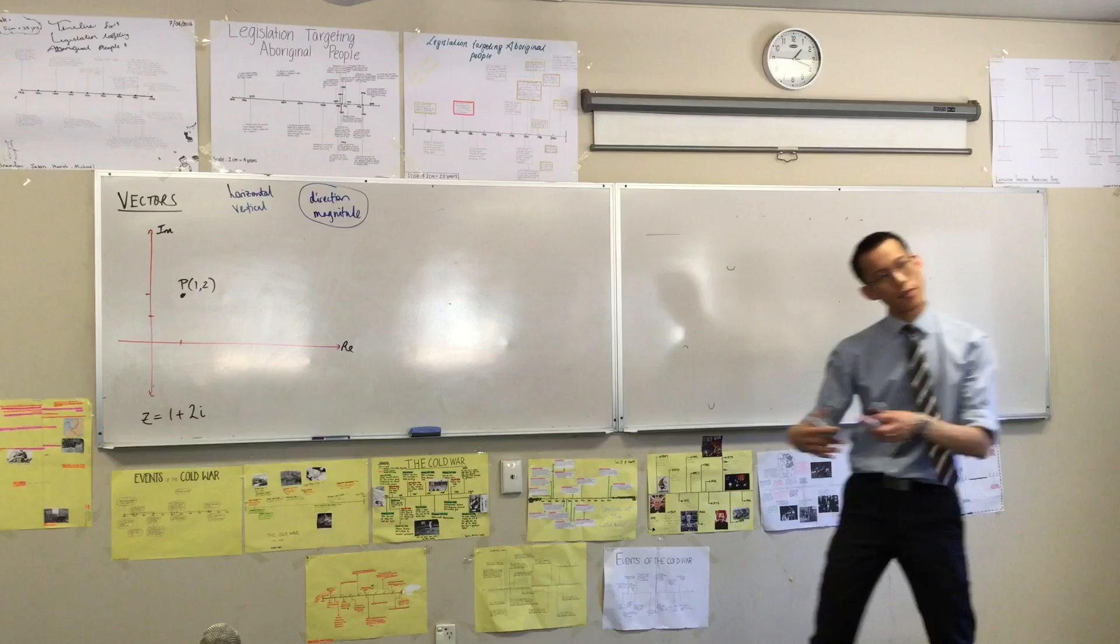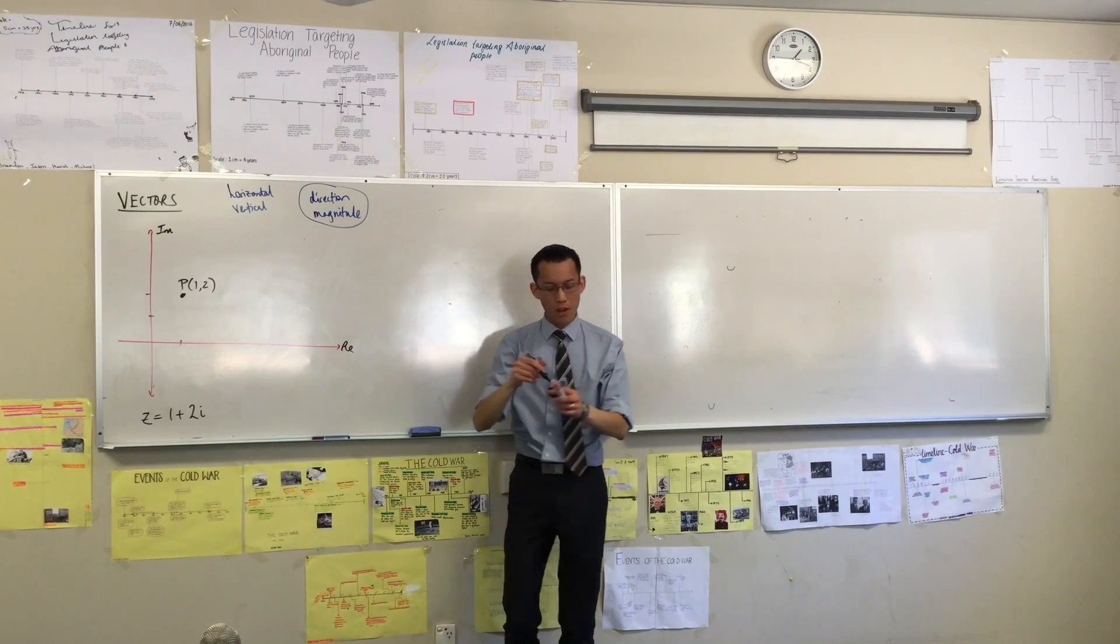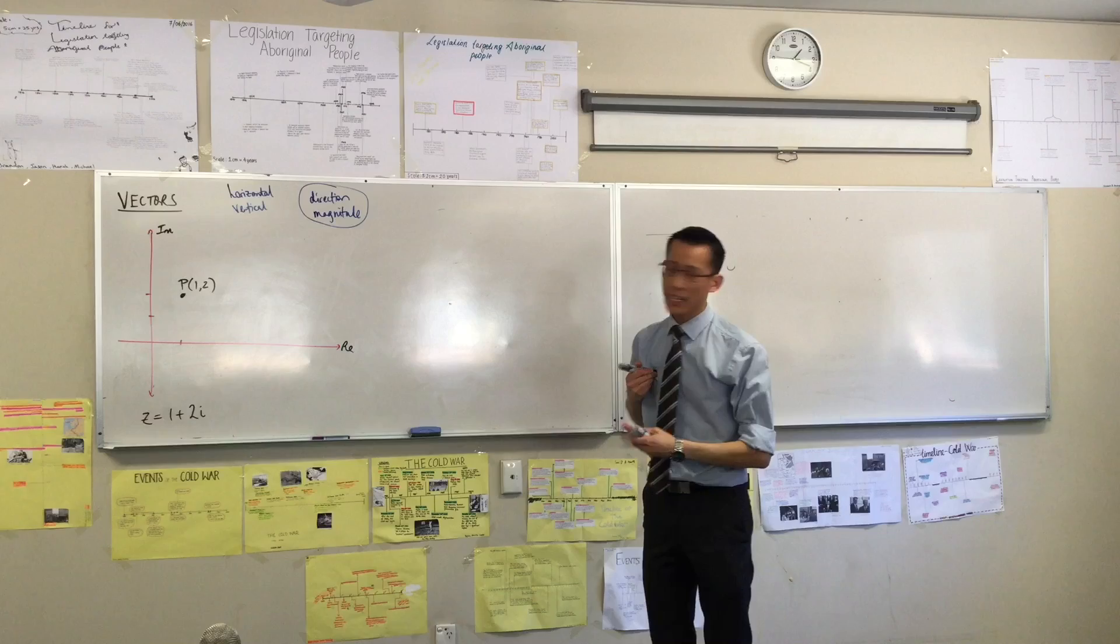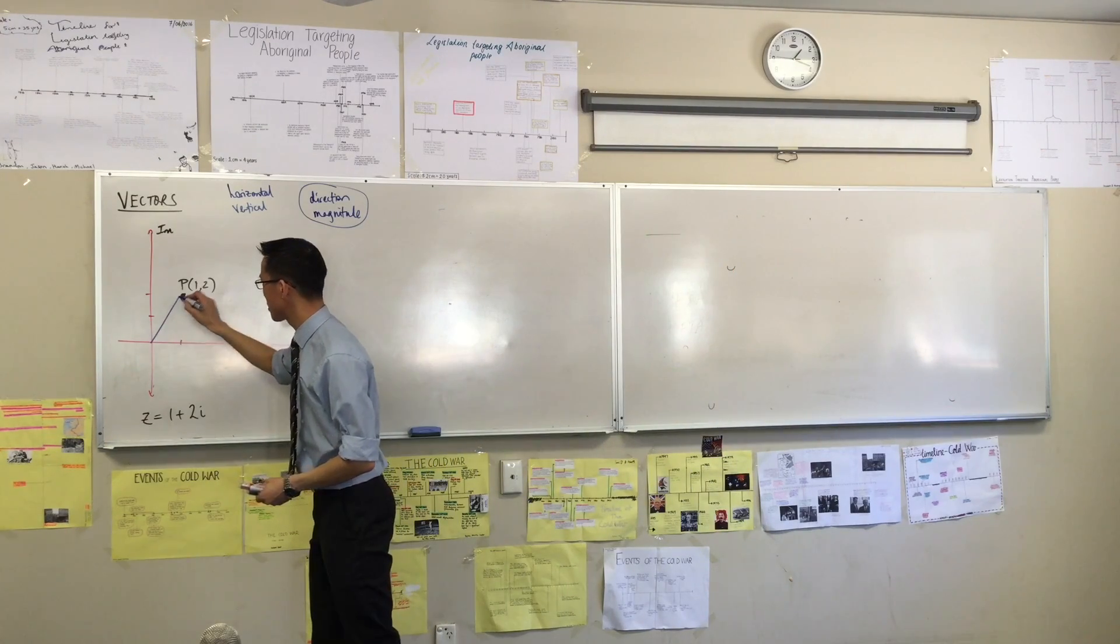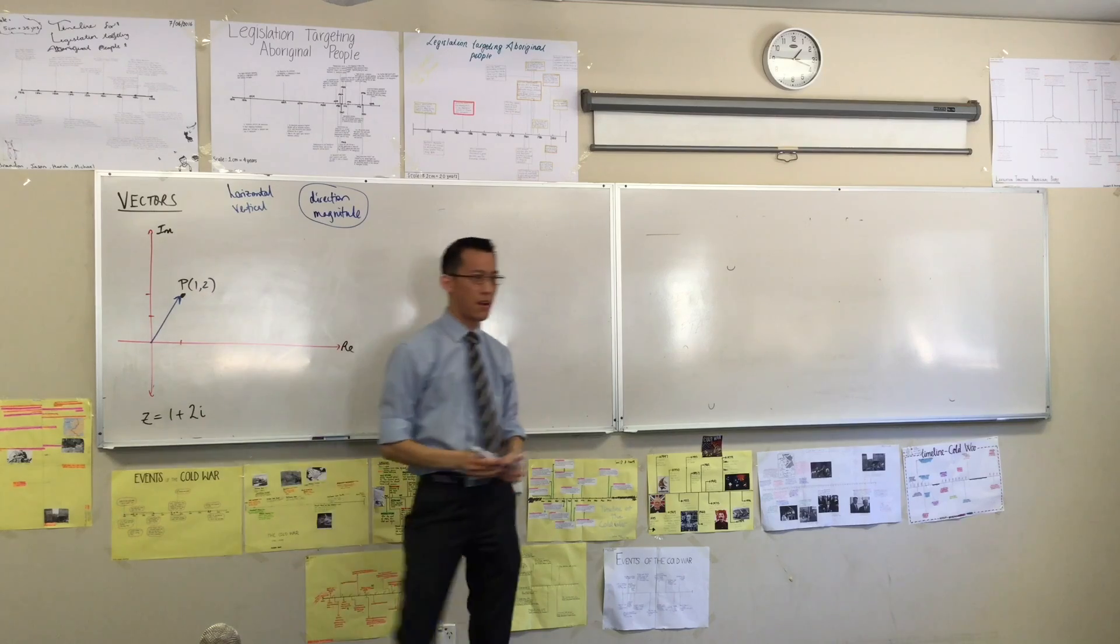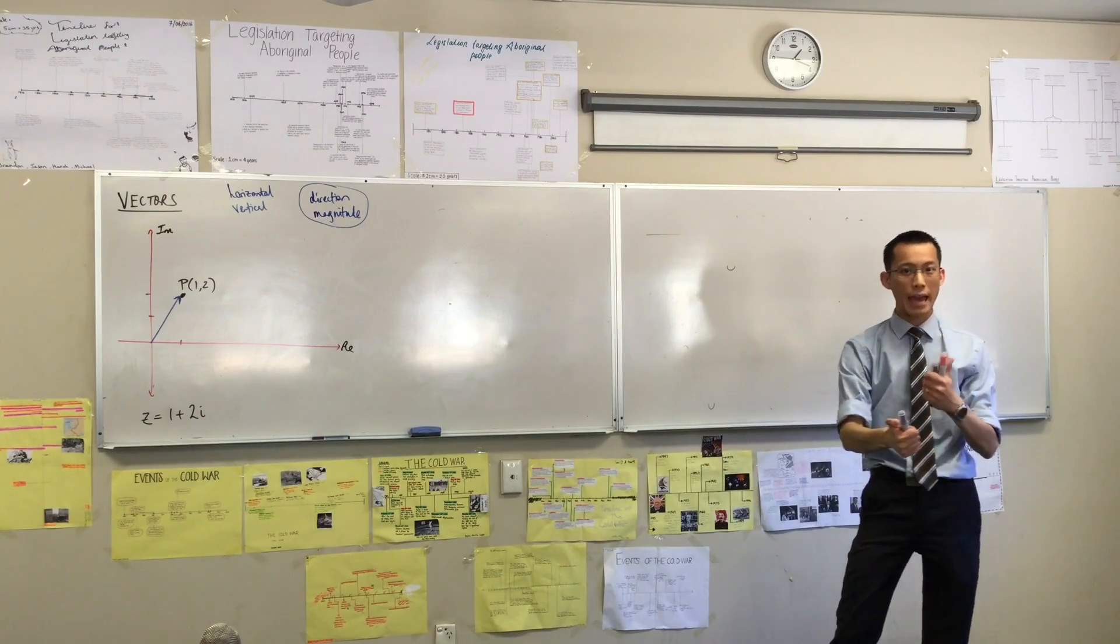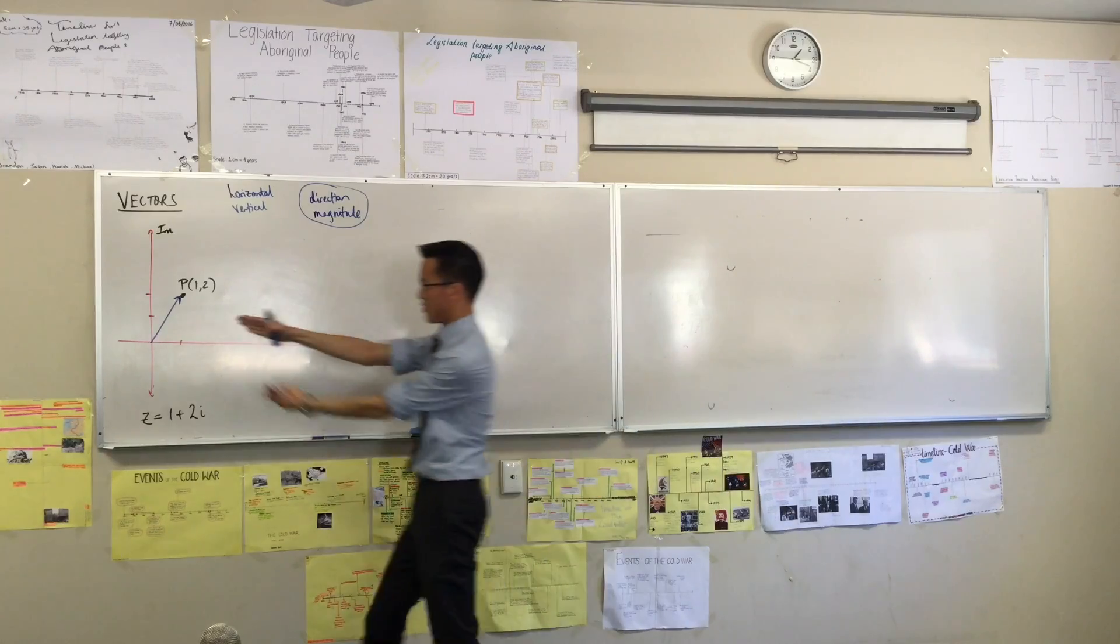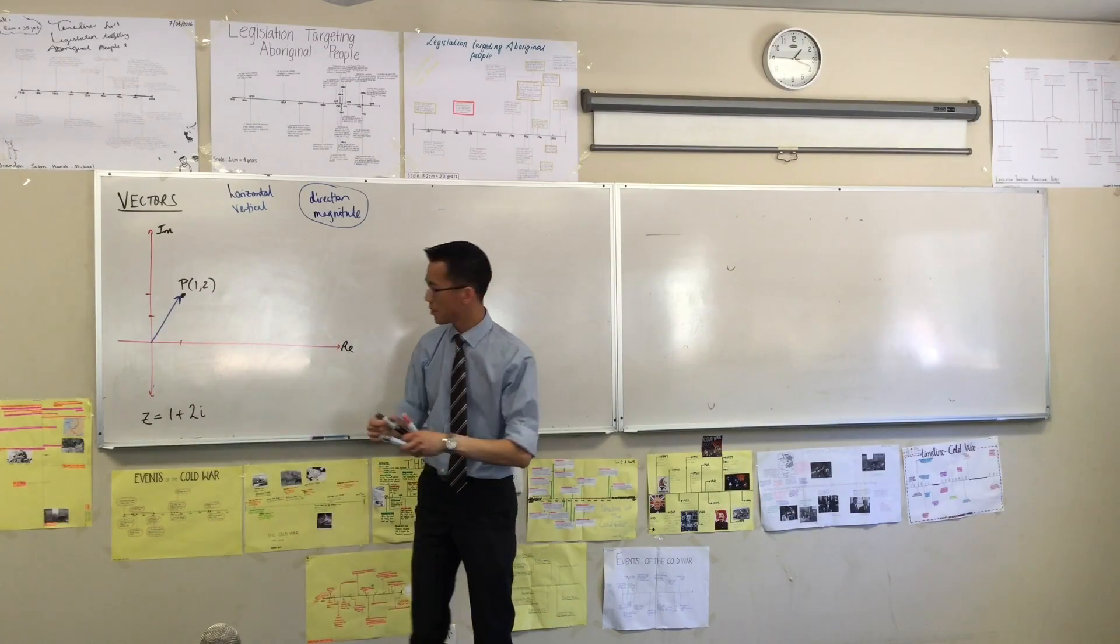Now, that point P by itself can represent 1 plus 2i. But the idea of a vector says, well, how about we use these. Now onto your diagram, instead of just writing P, I'd like you to draw a vector, which represents this interval with an arrow. And you can see how that tells you magnitude and direction. The length of this tells you the magnitude, and which way it's facing tells you direction.